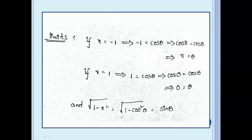The limits will also change. We also get root(1 minus x squared) equal to root(1 minus cos² θ), which equals sin θ.